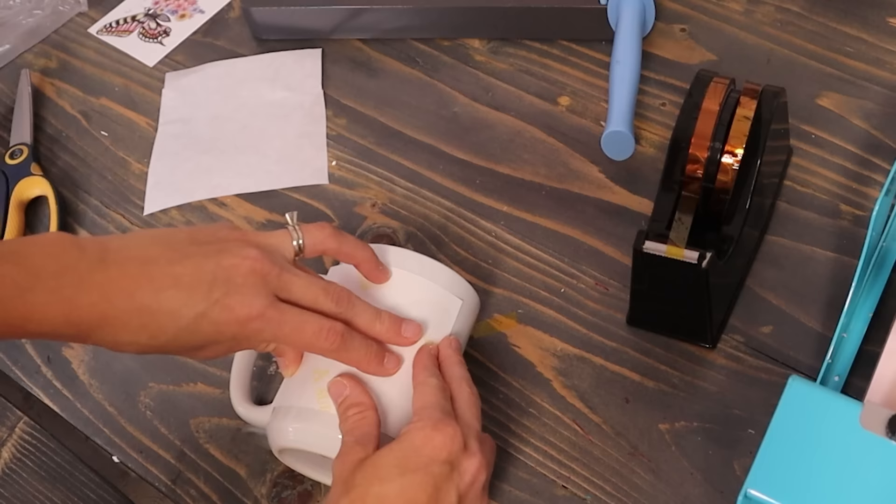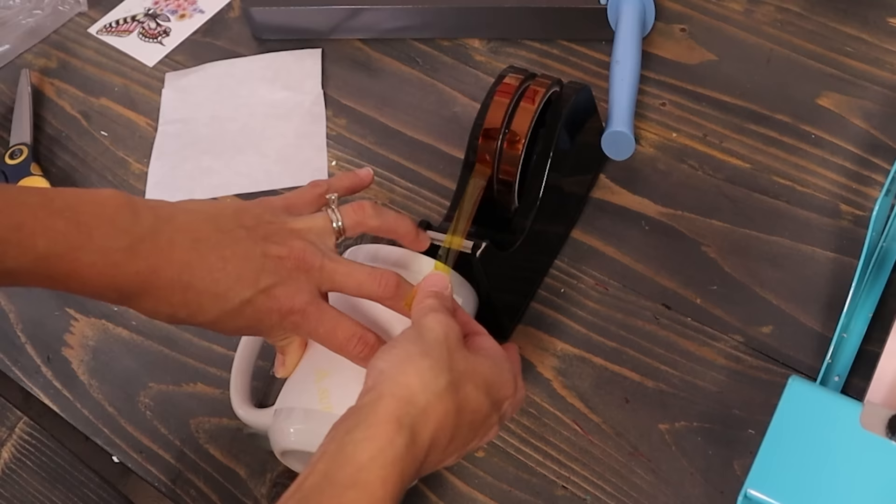Okay, once you've got your design where you want it, you're going to take your tape and just put it over your design on the sides, on all four sides.